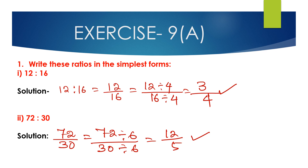When we convert the ratio into the simplest form, we first find out the common factor and divide it with the antecedent and the consequent both. Then the ratio that we get after dividing the antecedent and the consequent is the simplest form of the given ratio.